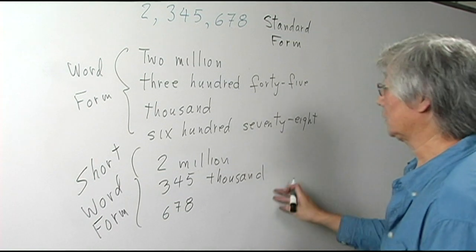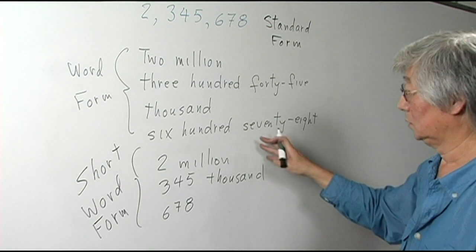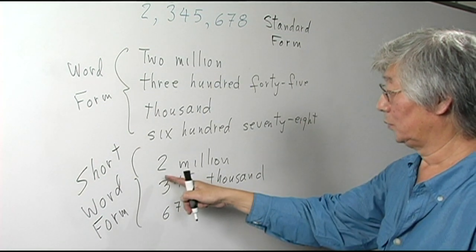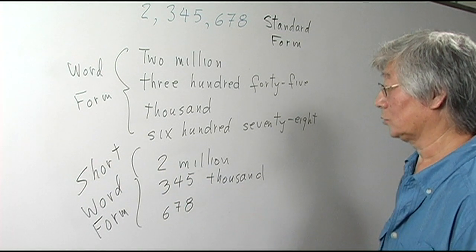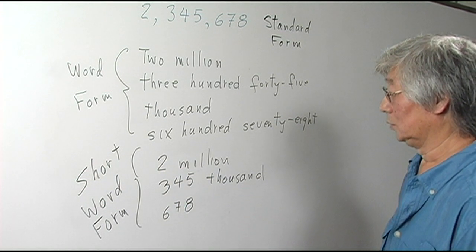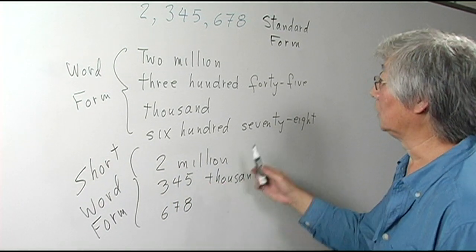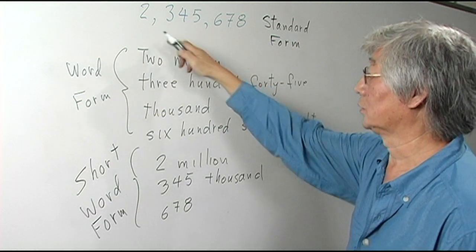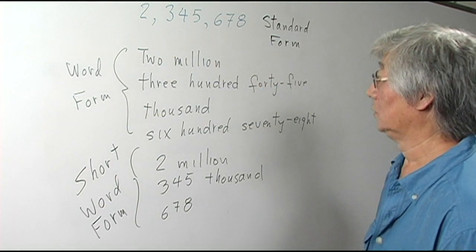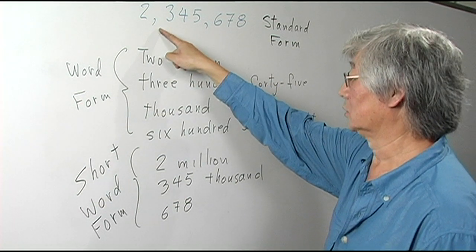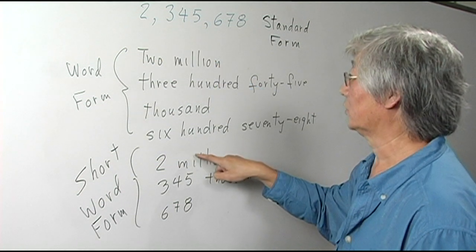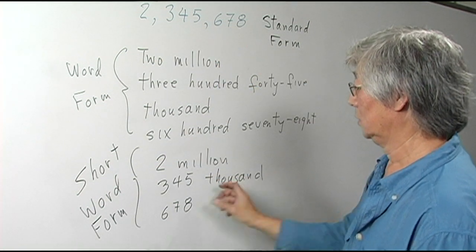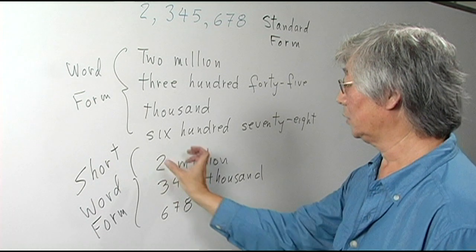So we have contracted a lot of these words but still give the same information. We're using words only to indicate major breaks. For instance, 'million' is spelled out, 'thousand' is spelled out, but anything in between, we use numerals.